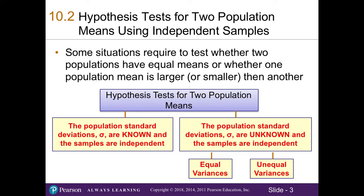In business, there will be times when you have to test whether two populations have equal means, or if one population mean is larger or smaller than a second population mean. We learned how to conduct hypothesis tests for one population in Chapter 9, and the process is very similar for hypothesis testing of two populations. We will continue to use the three-step decision-making process from Chapter 9 and the worksheets.